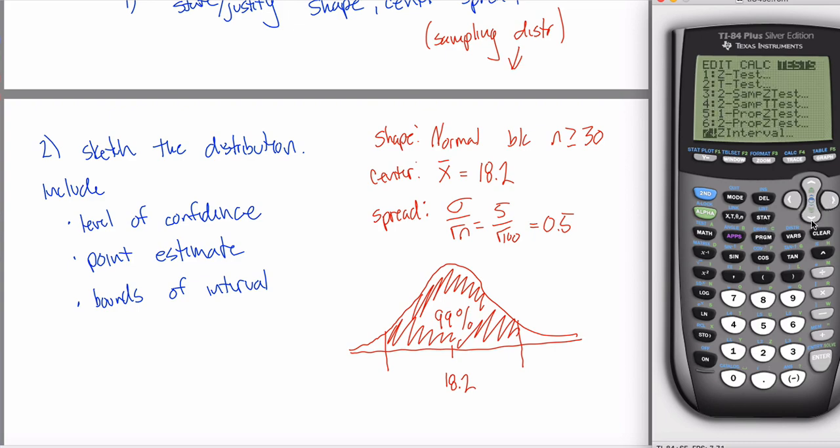Remember, it's under the tests function. And it's Z interval that you want. Z interval. Seventh thing on the list. If you hit enter, it'll ask you if you have the data itself. That was that list of 100 numbers. We don't have that. In this case, we have statistics. Sigma, and they really do want sigma, is 5. X bar is 18.2. And N is 100. Since it wants N, it doesn't need the spread. It's asking you for all the components of the spread. It'll calculate it itself. Confidence level is 99% this time. So 0.99. And hit calculate.